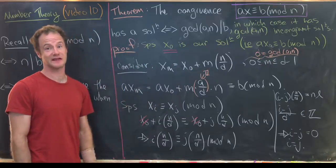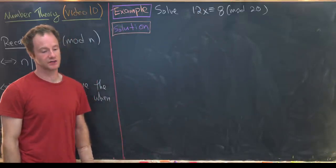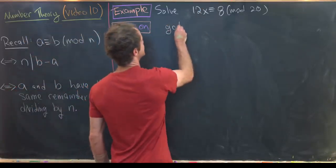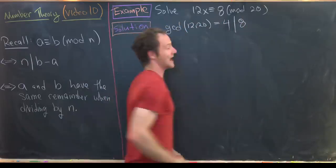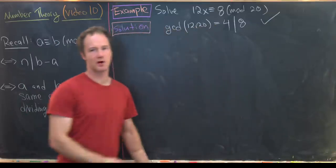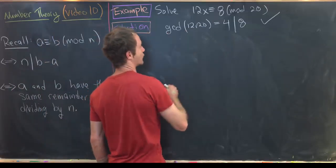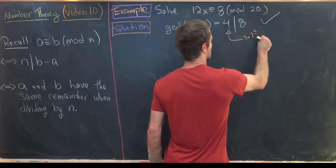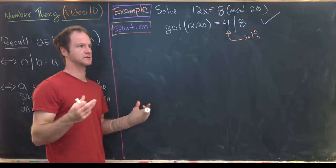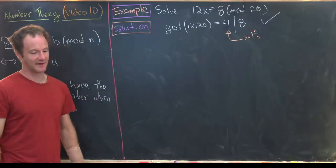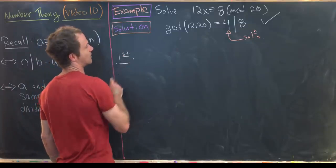For our first example, solve 12x ≡ 8 (mod 20). The gcd of 12 and 20 is 4, and 4 divides 8, so there is a solution. There are exactly 4 incongruent solutions modulo 20. Following the structure of the proof, we first want to solve 12x₀ + 20y₀ = 4.